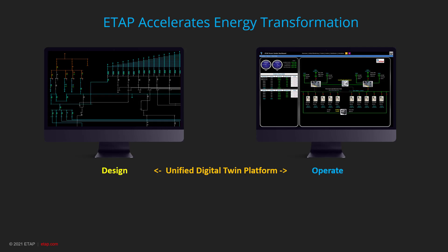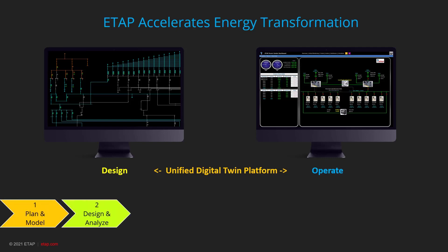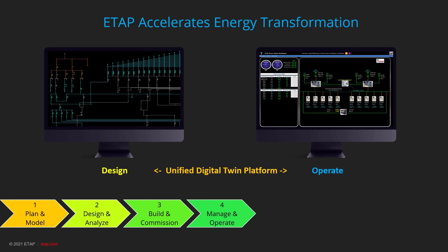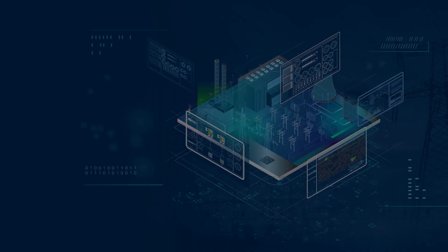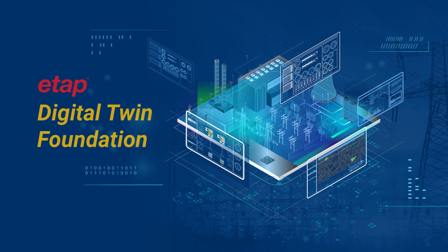The multiphase process includes: plan and model, design and analyze, build and commission, manage and operate, assess and maintain, transform and grow, and decarbonize for sustainability of the system. Thank you for listening to my presentation. If you have any questions, you can contact ETAP. Thank you very much and God bless.